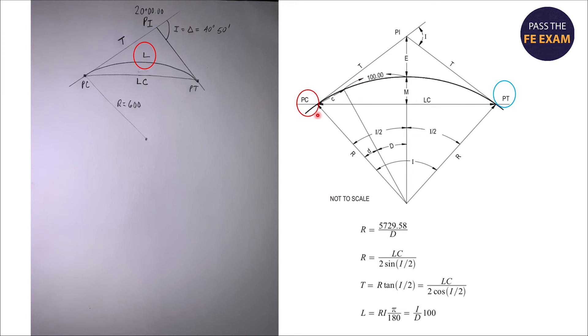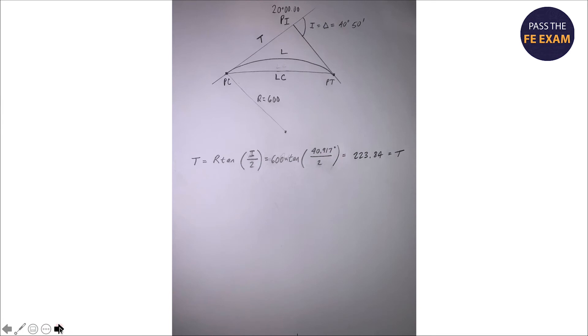Once we have the tangent, then we'll need the length of the curve. We can see that that equation is here and we have everything we need for that. We have the radius, we have the deflection angle, and then it's just pi over 180. So that being said, let's walk through and do our calculations.